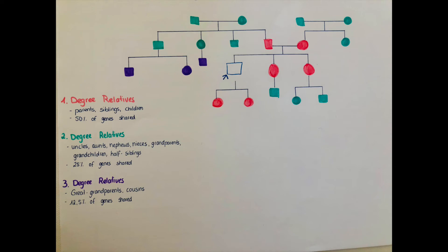Now I want to talk about the degrees of relation. On the poster here I drew a family tree with different colors representing degrees of relation, starting with the blue square with an arrow. Everything in pink represents that person's first degree relatives — including parents, siblings, and children — the people with whom this person shares 50% of their genes. In the blue-turquoise color are the second degree relatives, those with whom this person shares 25% of their genes.